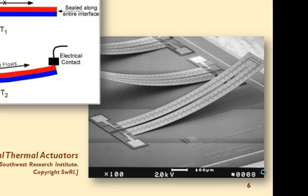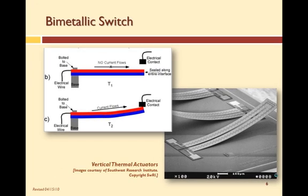At the micro-scale, bimetallic actuators are made using metallic and non-metallic materials. A variety of thin films with different thermal expansion characteristics are used to fabricate switches, electrodes, valves, strain gauges, and diaphragms.